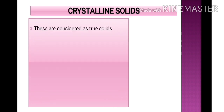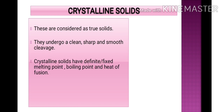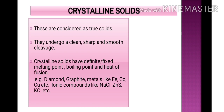Crystalline solids are true solids. They undergo a clean, sharp, and smooth cleavage when cut with a knife. They have definite or fixed melting and boiling points as well as heat of fusion — meaning when heated, they melt at a fixed temperature, such as exactly 60°C or 70°C. Examples include diamond, graphite, metals like iron, cobalt, and copper, and ionic compounds like ZnS, sodium chloride, and potassium chloride.